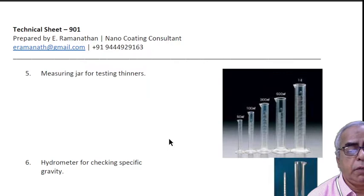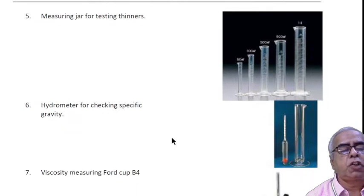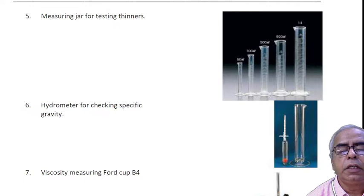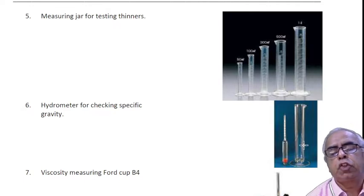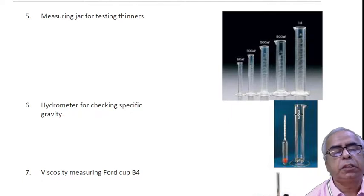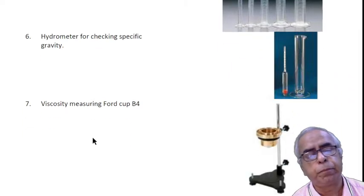You should have measuring jars of various capacity, starting from 50 ml to at least one liter. You need a hydrometer to measure the specific gravity of the liquid. Keep the liquid inside, make the hydrometer float on it, and based on the floating level you can measure the specific gravity.